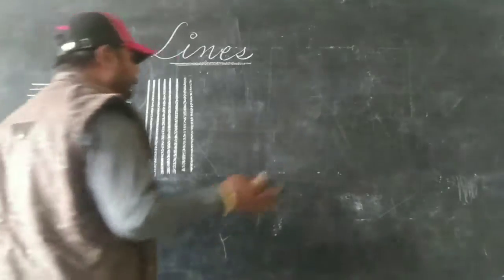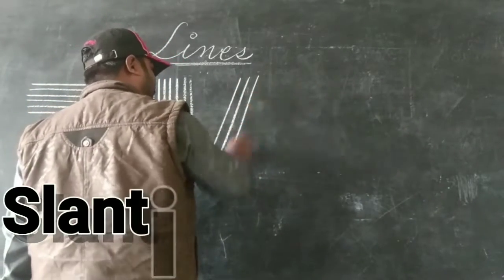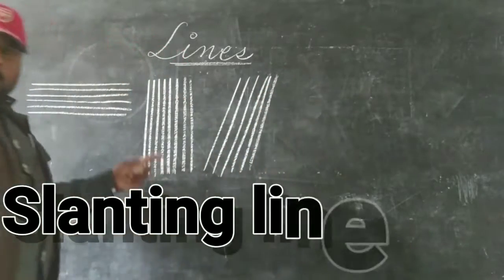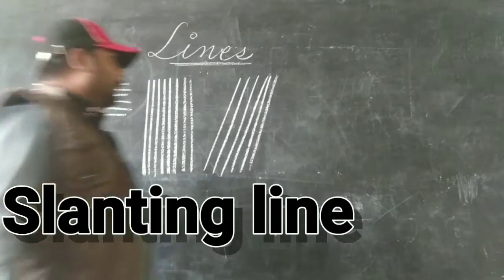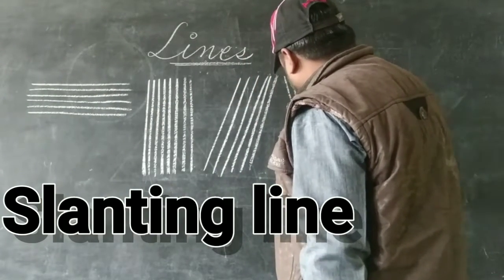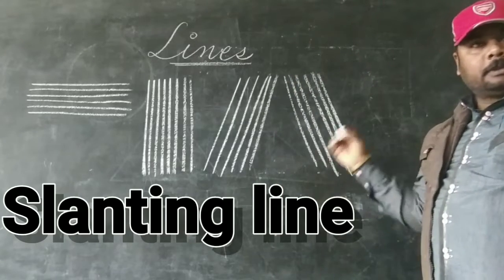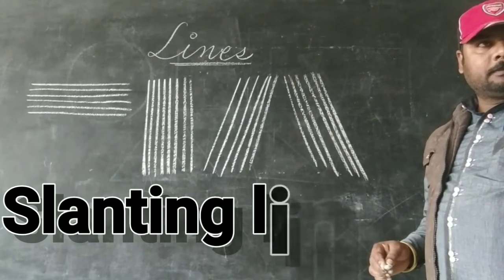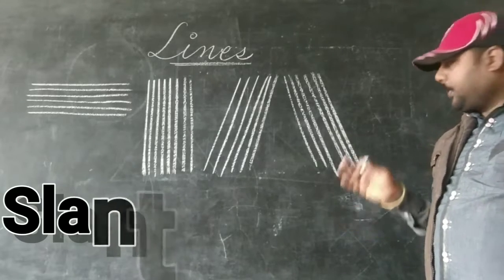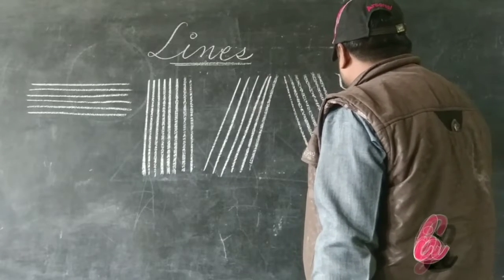And then this one is a slant line. That is the difference — slanting line. You make the slanting line this way. Slanting. Good.